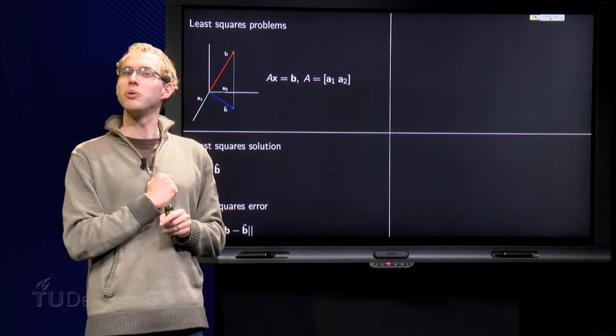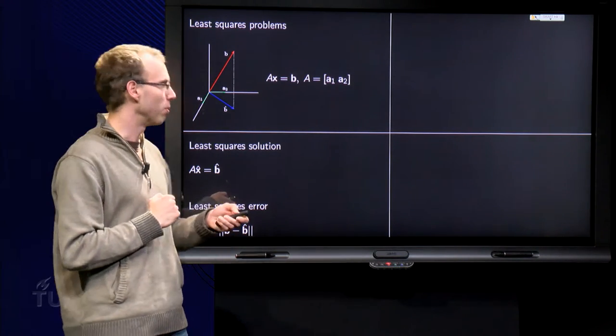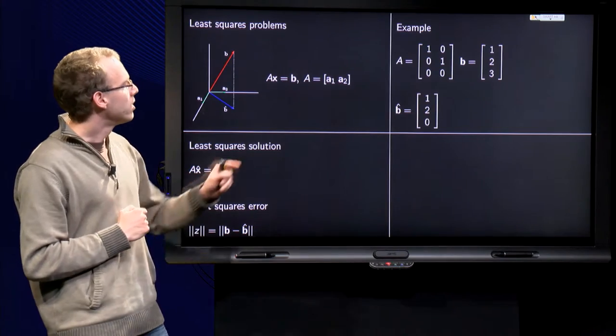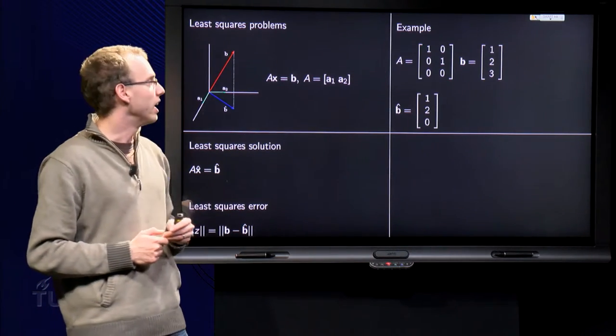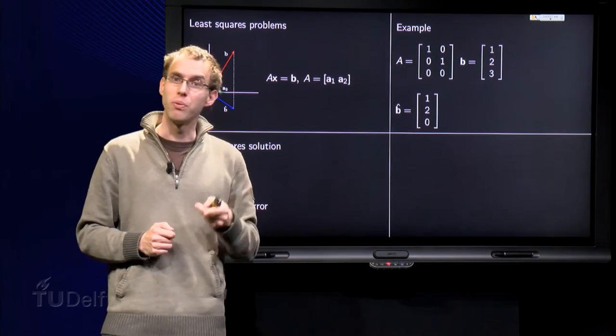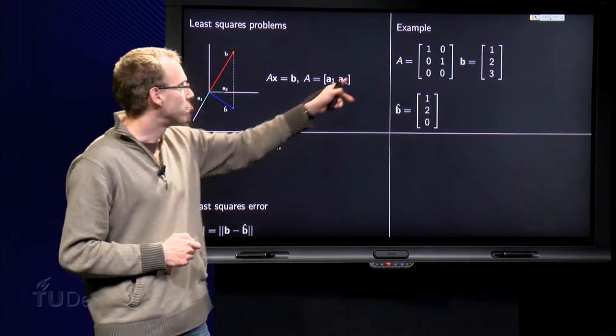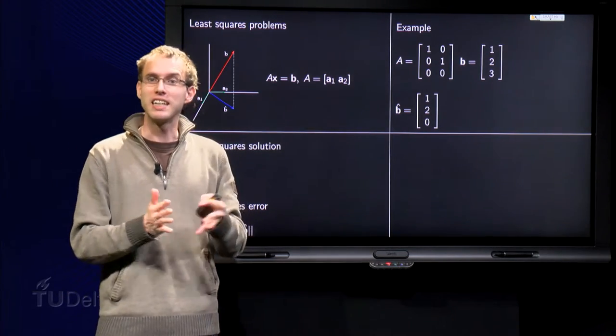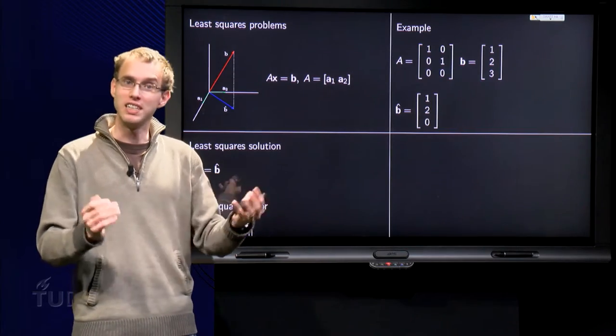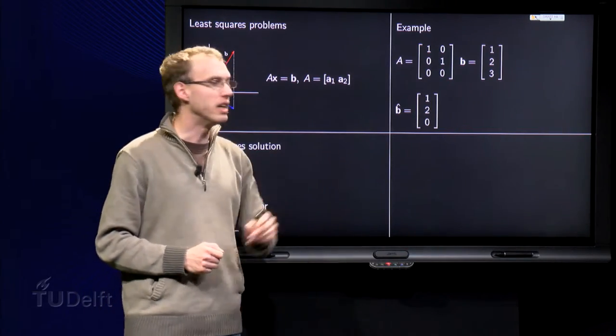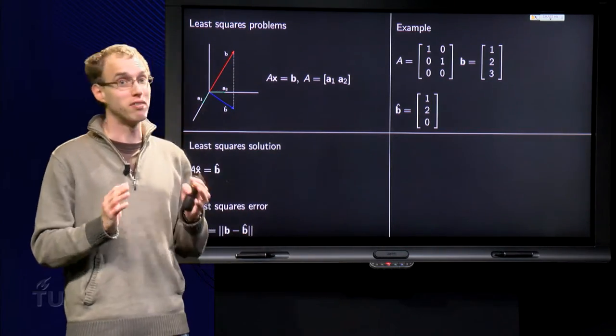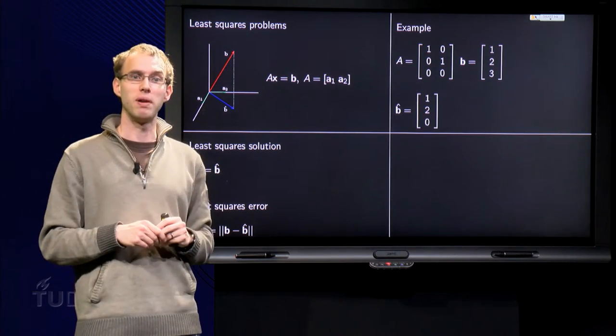Let's look at an explicit example. Suppose we have A = [1,0; 0,1; 0,0]. So the span of the columns of A is exactly the XY plane. And we have b = [1, 2, 3], which is definitely not in the XY plane.